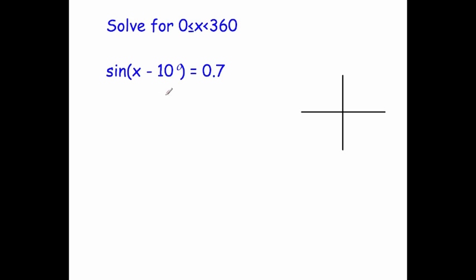Let's have a look at the values of x. We have got 0 ≤ x ≤ 360, but we've been asked to solve for x minus 10. That means we need to take 10 degrees off everything, so x minus 10 is going to be between negative 10 degrees and 350.